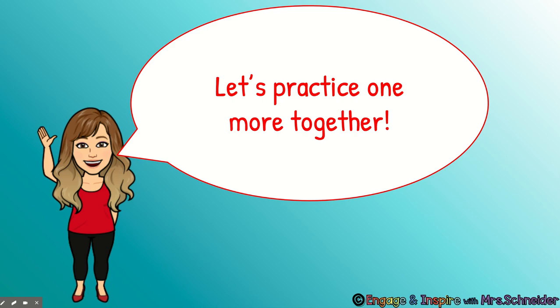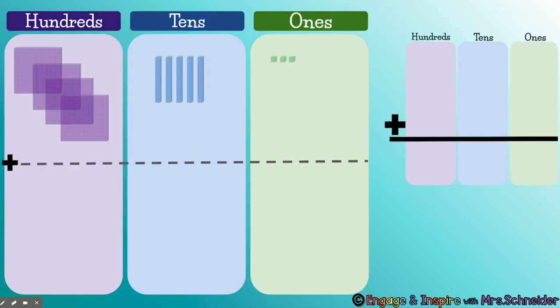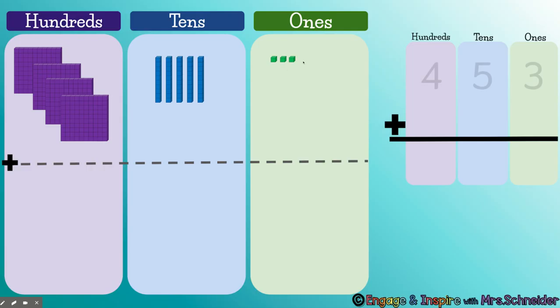Let's practice one more together. Here we have the problem: 1, 2, 3, 400, and 10, 20, 30, 40, 50, 3 — 453. Plus — there's no hundreds — so 10, 20, 21, 22, 23, 24, 25. So 453 plus 25.